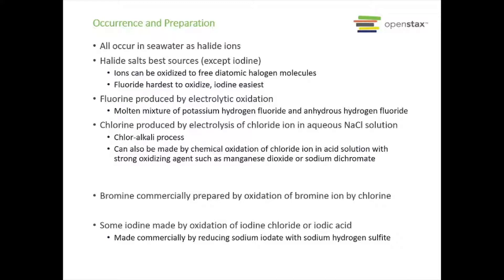All of our halogens occur naturally in seawater as halide ions, so Cl⁻, Br⁻. Halide salts tend to be the best sources of them, except for iodine. Their ions can be oxidized from the iodide or bromide to their free diatomic halogen molecules, but fluorine is the hardest to do this for, with iodine being the easiest.